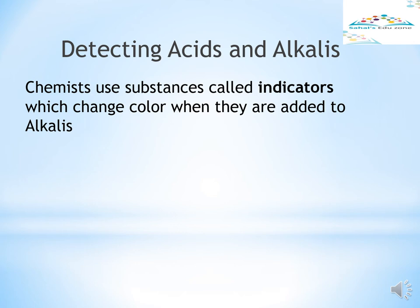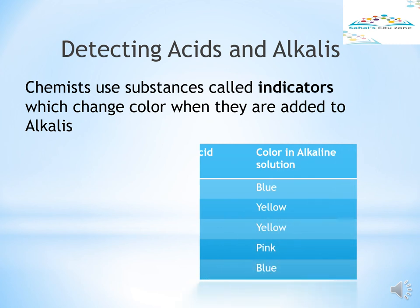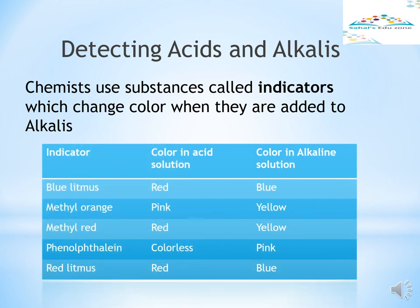Litmus is used as a solution. Litmus solution is purple, but it turns red when it comes into contact with an acid. When an alkali comes into contact with a purple litmus solution, the solution turns blue. Chemists use substances called indicators which change color when they are added to acids or alkalis. There are over 20 indicators that scientists use. Here are some examples: blue litmus, methyl orange, methyl red, phenolphthalein, and red litmus. For example, phenolphthalein is colorless in acid solution and pink in alkaline solution.